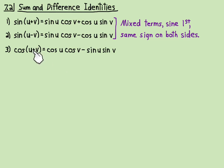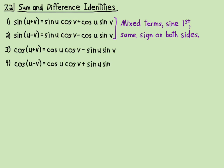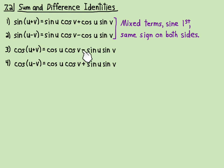Notice that for cosine u plus v, on the right side you get a minus. For the difference identity, cosine of u minus v, you get a plus on the right. So the sign on the left is opposite the sign on the right — plus on the left gives you negative on the right, and negative on the left gives you positive on the right. They're non-mixed terms: cosines go together and sines go together.